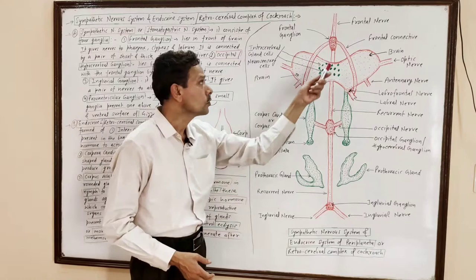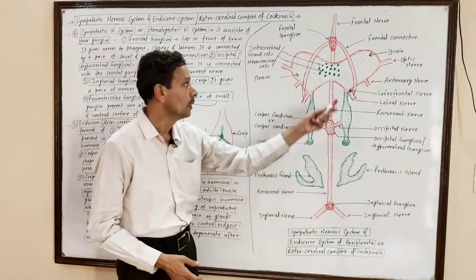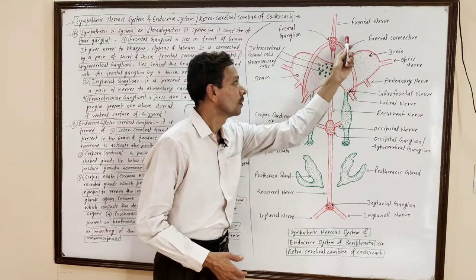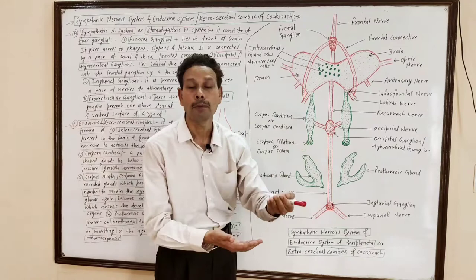Dear students, this frontal ganglion remains connected with the occipital, or hypocerebral ganglion, by a thick stout recurrent nerve. The second ganglion lies behind and just below the brain — it is the hypocerebral ganglion, also named the occipital ganglion.